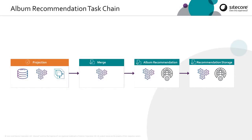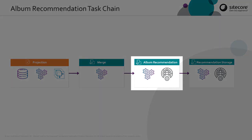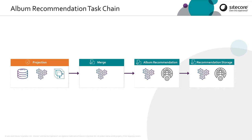If I were a data scientist for the album recommendation task, I would probably want to design the algorithm myself, or use a particular algorithm for classification — I could run that on ML server or any other ML tooling integrated with the Cortex processing engine. However, I'm not a data scientist and I'm strapped for time. So rather than learning all about classifier and recommendation systems, I'm going to use an existing API: the Spotify API. I'll be using that as an external service for my album recommendation. The service in the recommendation storage is going to be XConnect itself.